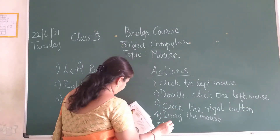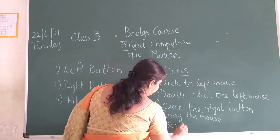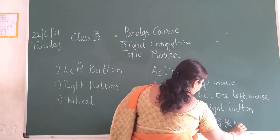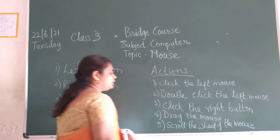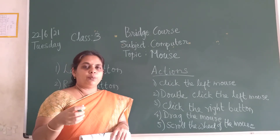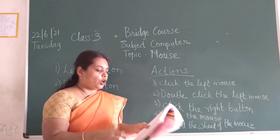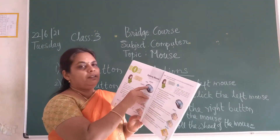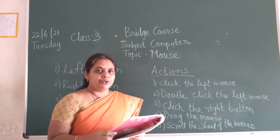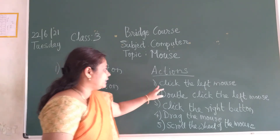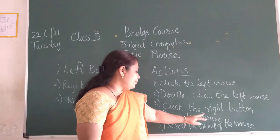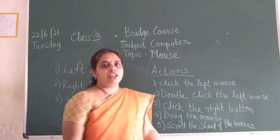The next action is the scroll wheel of the mouse. When you have so many pages in a word document, you can use this scroll wheel to move the pages up and down children. So these are the 5 actions you can do using a mouse: click the left mouse, double click the left mouse, click the right button, drag the mouse, and scroll the wheel of the mouse.